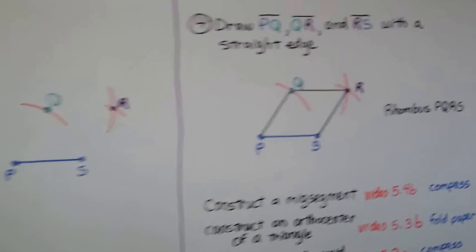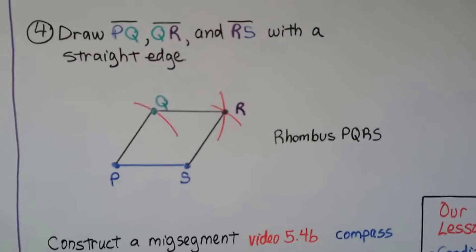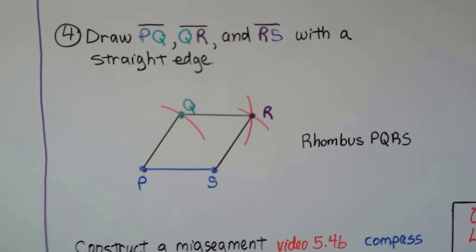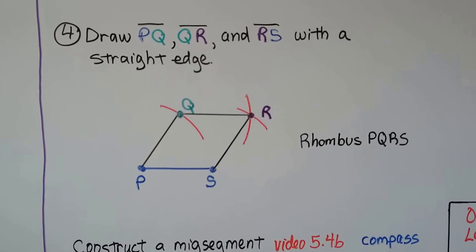I bet most of you have already figured this out. Now we just draw with a straight edge PQ, QR, RS, and we have rhombus PQRS.